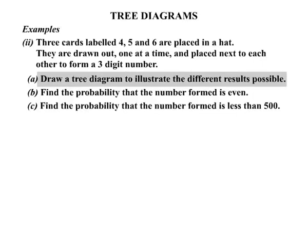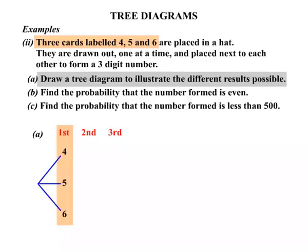Well let's start by our tree diagram. So they are drawn out one at a time. So a first draw, a second draw and then a third draw. Now the three cards are labelled 4, 5 and 6. So the first possibility, we could get a 4, or we could get a 5, or we could get a 6.